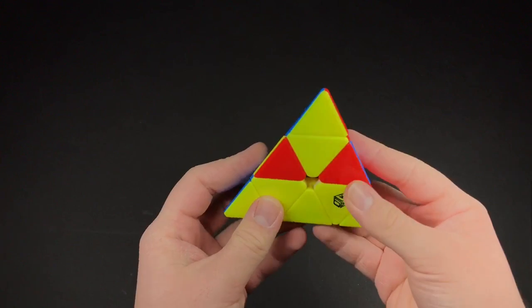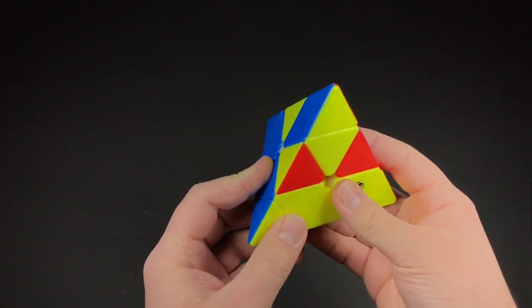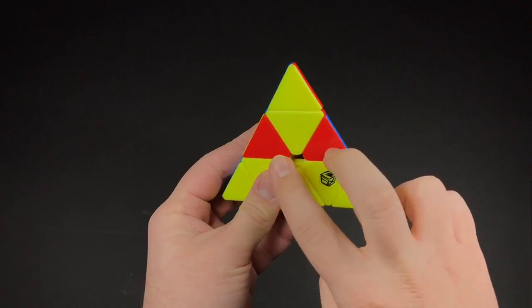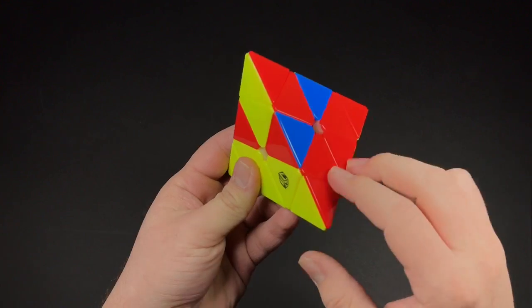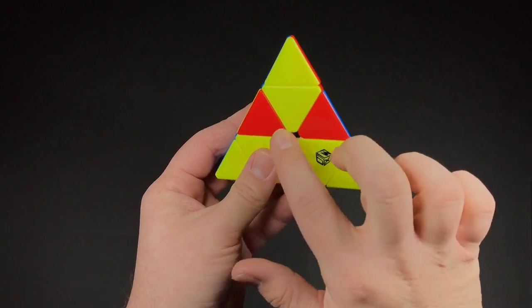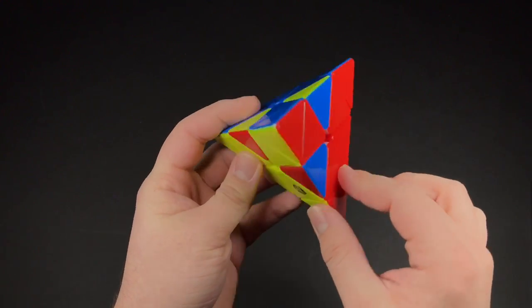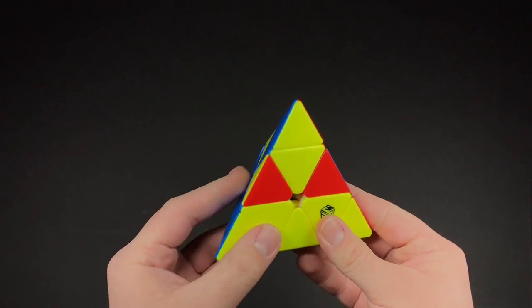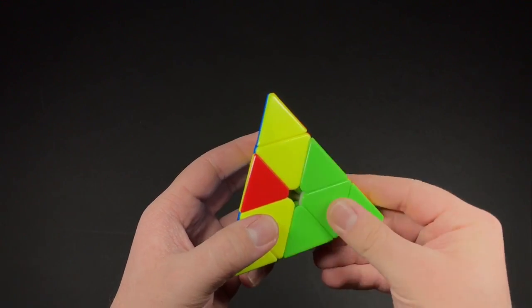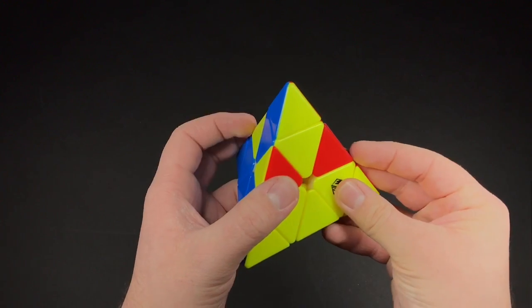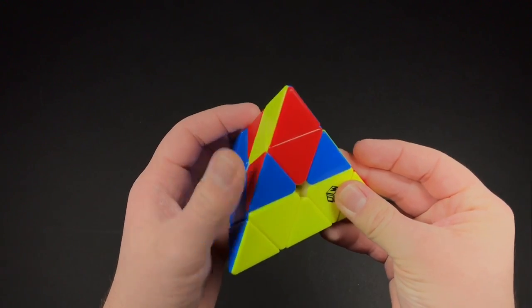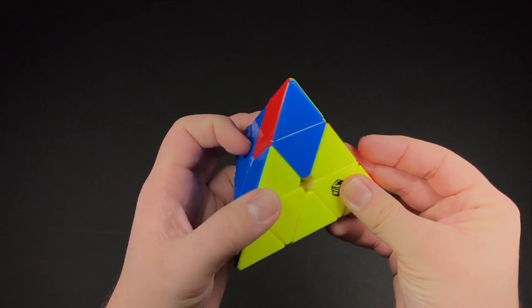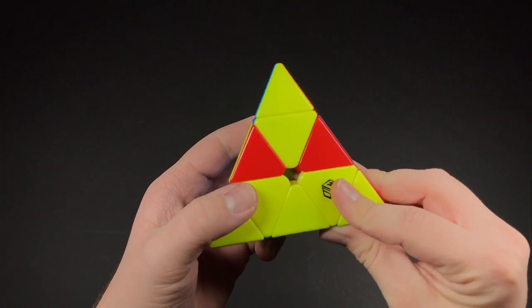Okay, the next case is really similar to the other one, except it's the reverse. So the red headlights are on the right and in the front. So it looks like that. And it's just the same R moves except you do U moves instead of U prime. So it'll go like this.